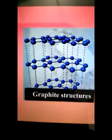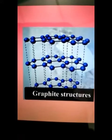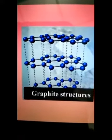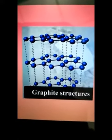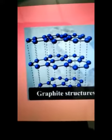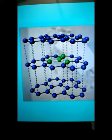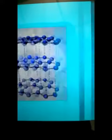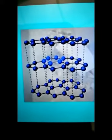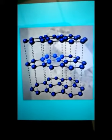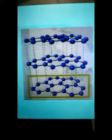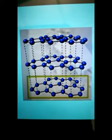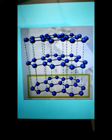In Graphite, each Carbon atom is bonded to 3 other Carbon atoms in the same plane, forming layers of hexagonal arrays. These layers of hexagonal arrays are placed one above the other.